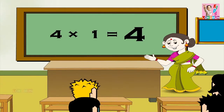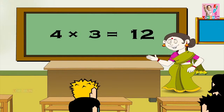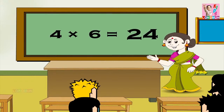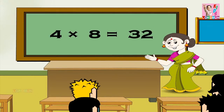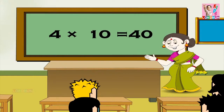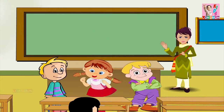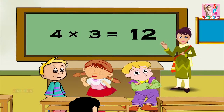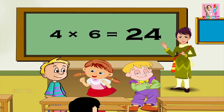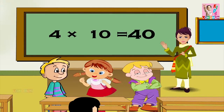Four ones are four, four twos are eight, four threes are twelve, four fours are sixteen, four fives are twenty, four sixes are twenty-four, four sevens are twenty-eight, four eights are thirty-two, four nines are thirty-six, four tens are forty, four elevens are forty-four, and four twelves are forty-eight.